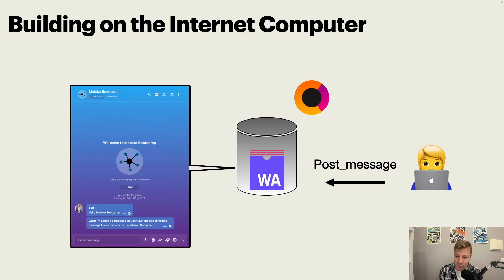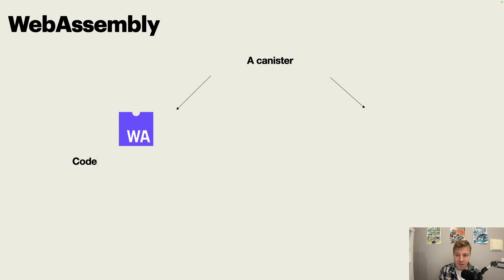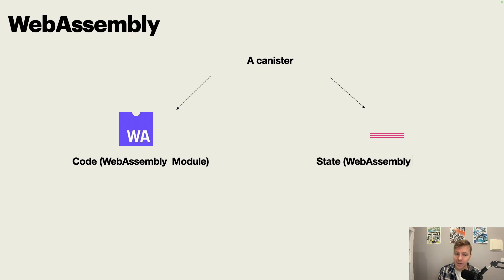For example, when I'm sending a message on OpenChat — "hello Motoko Bootcamp" — I'm also sending a message to one canister on the internet computer. So what is a canister exactly? A canister is very much related to a WebAssembly module. You have two sides: you have the code, which is a WebAssembly module, and you have the state of the canister, which is essentially the memory — and this is a WebAssembly memory.